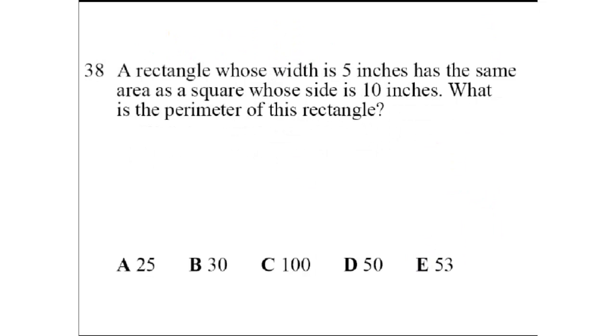Question number 38. A rectangle whose width is 5 inches. So here's my rectangle, and it has a width of 5 and a length that we don't know. So we're just going to call it L. Has the same area as a square. Here's your square. Whose side is 10 inches. What is the perimeter of the rectangle? Not the length, the perimeter. We know that the area here equals the area here.